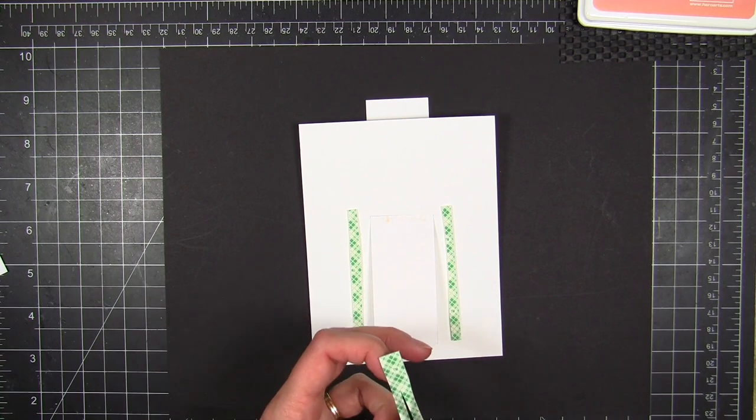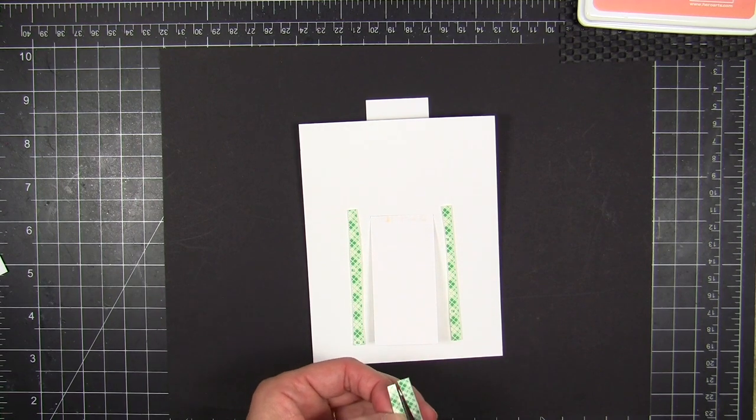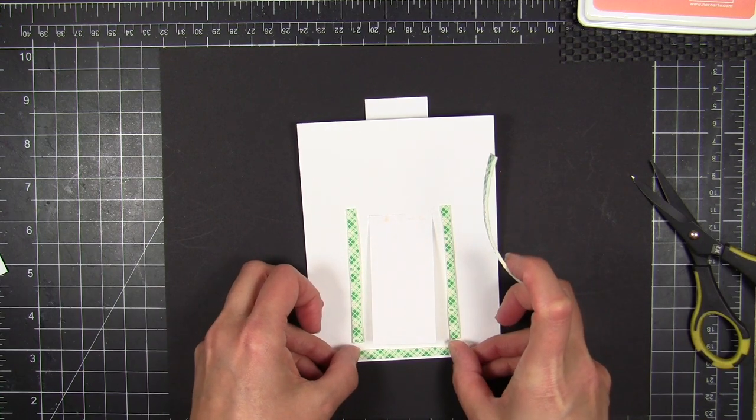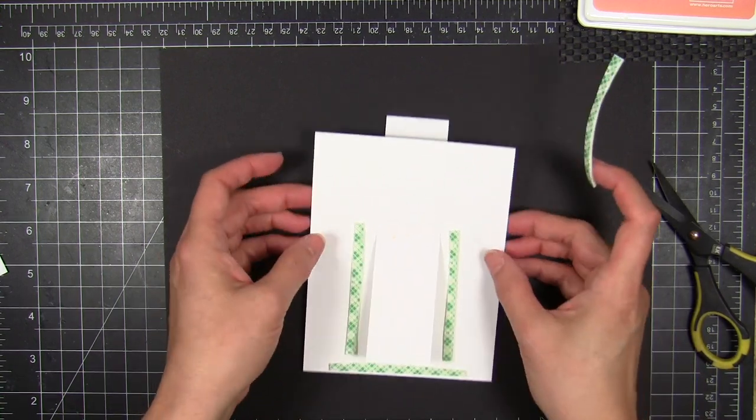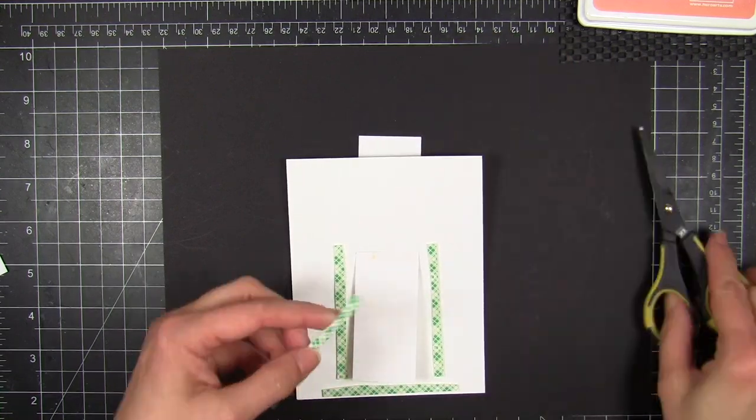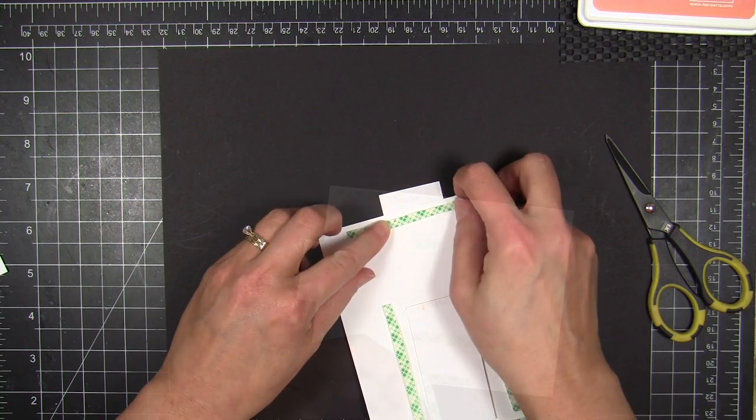So I'm going to take another one and put it at the bottom and this is going to create a stop gap at the bottom so that that strip doesn't fall out the bottom of the card. I mean you could not worry about that but I don't want it falling out so I'll just go ahead and put that stop gap there of foam tape.